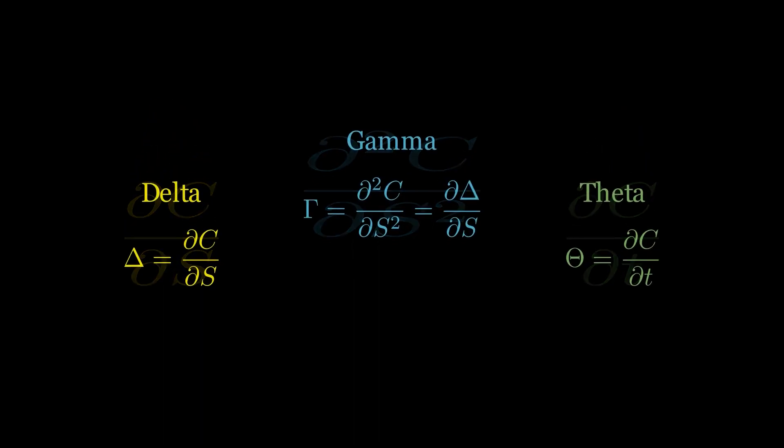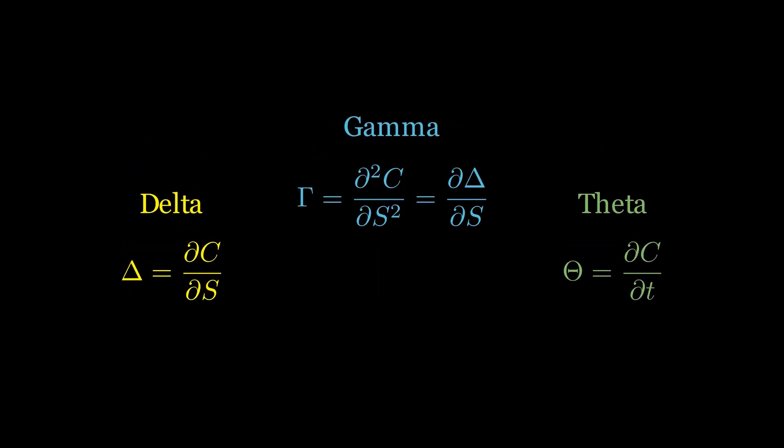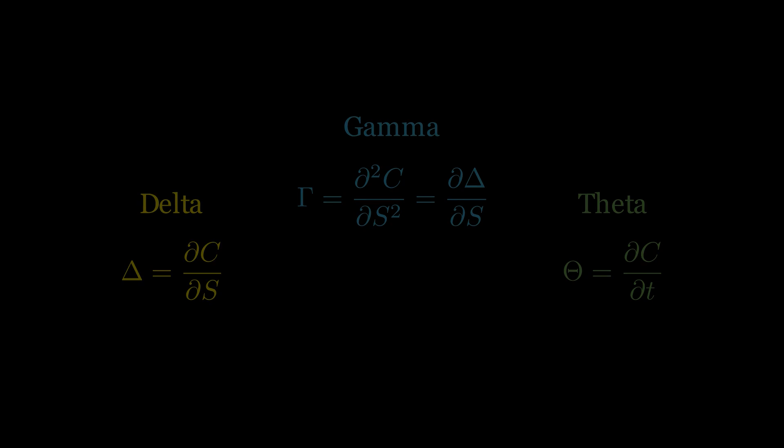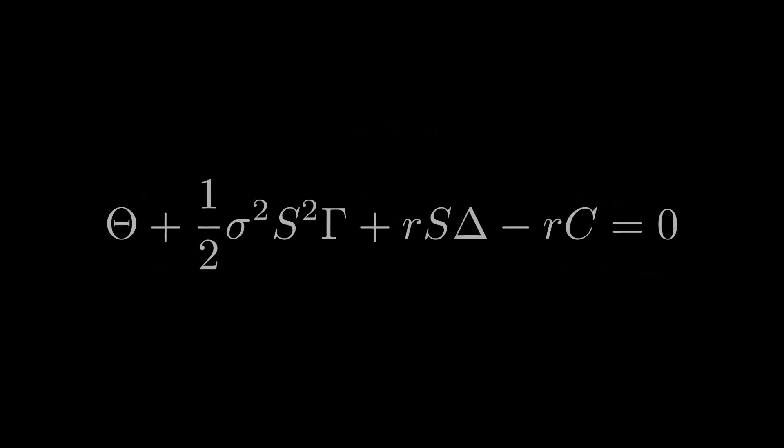If you look closer, you'll recognize some familiar terms. Delta: how the call price changes with a change in stock price S. Gamma: the rate of change of delta, or how delta changes as the stock price changes. And theta: how the call price changes as time passes.